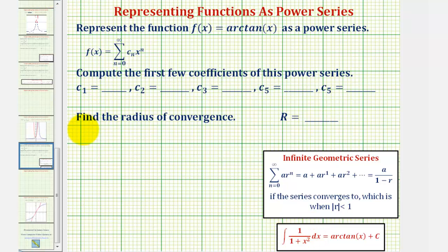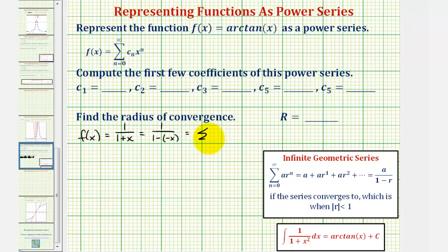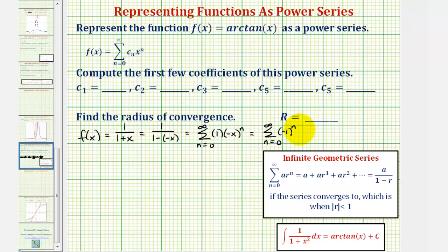Let's start with a more basic function. If we have f(x) = 1/(1+x), we can rewrite this as 1/(1−(−x)) to fit the form of the geometric series formula. Therefore, this function as a power series equals the summation from n=0 to infinity of a times r^n, where r = −x. So we have the summation from n=0 to infinity of (−1)^n times x^n.